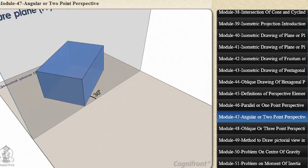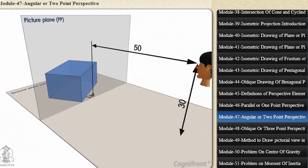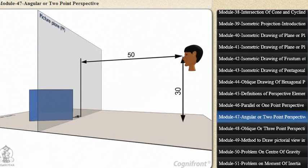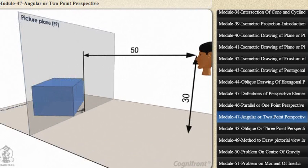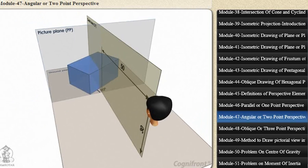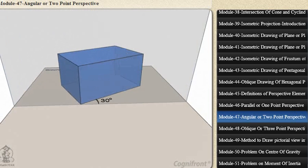The station point is 50mm in front of the picture plane, 30mm above the ground plane, and lies in a central plane which passes through the center of the block. Draw the perspective view of the block.